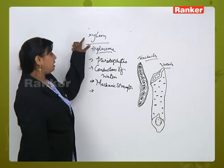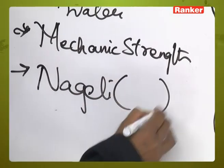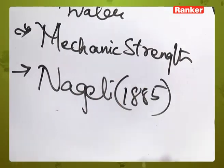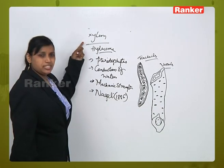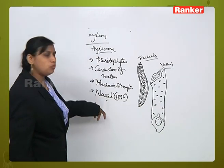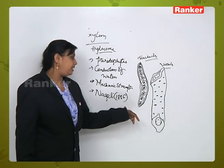And this term xylem was first introduced by an anatomist, Nagelli, in the year 1885. So we may get a question like, what is the alternative name of xylem? Who introduced the term xylem? Nagelli gave the term xylem in 1885.